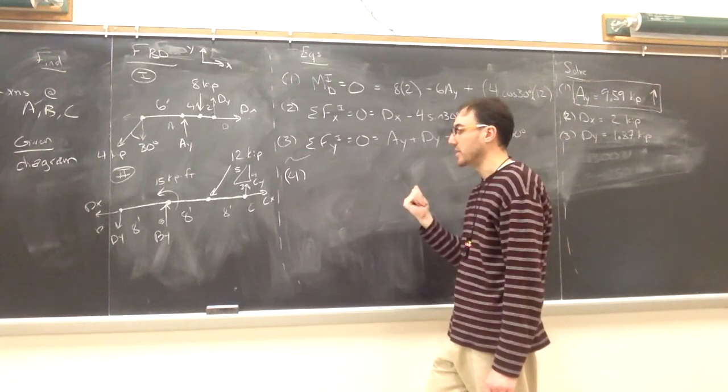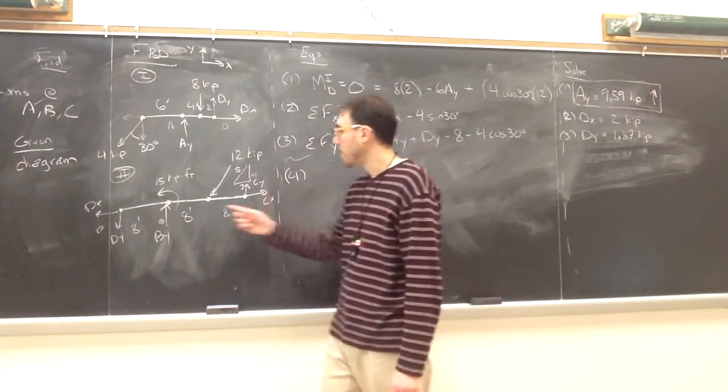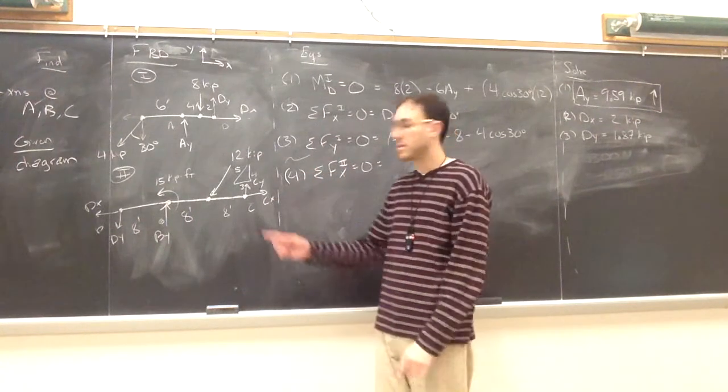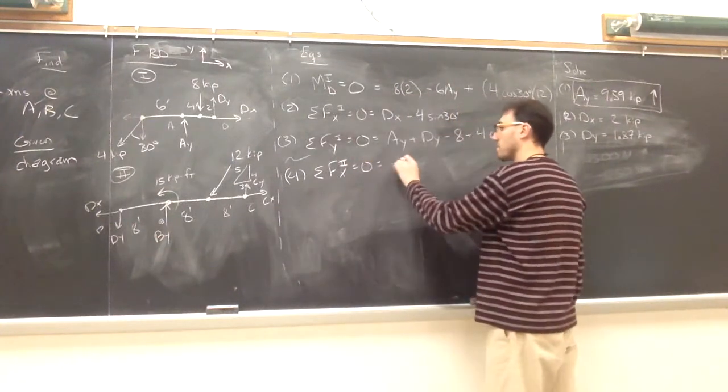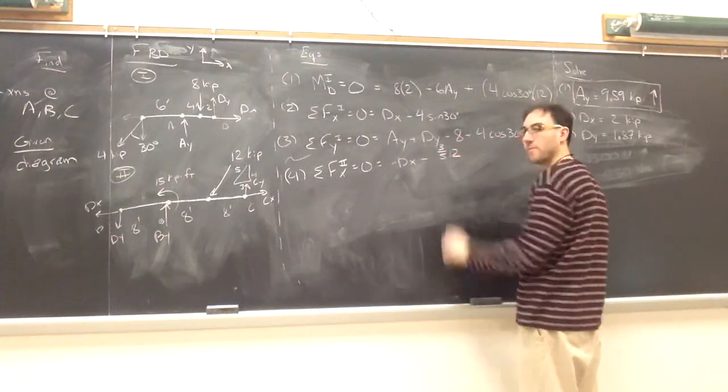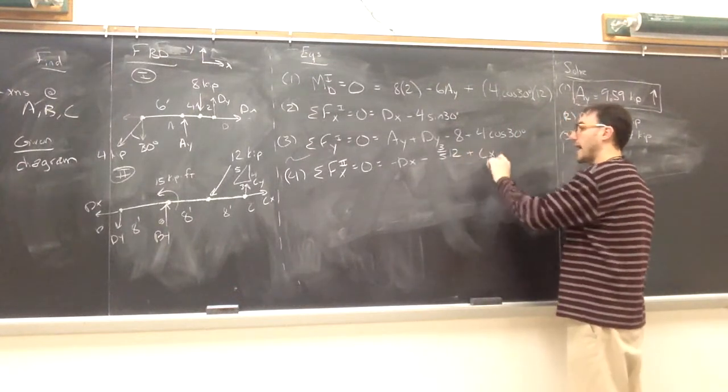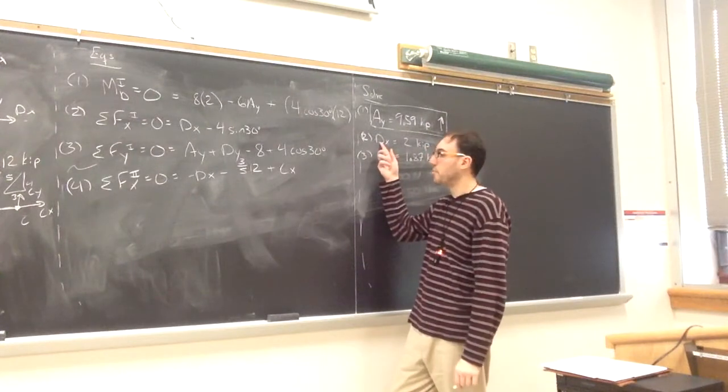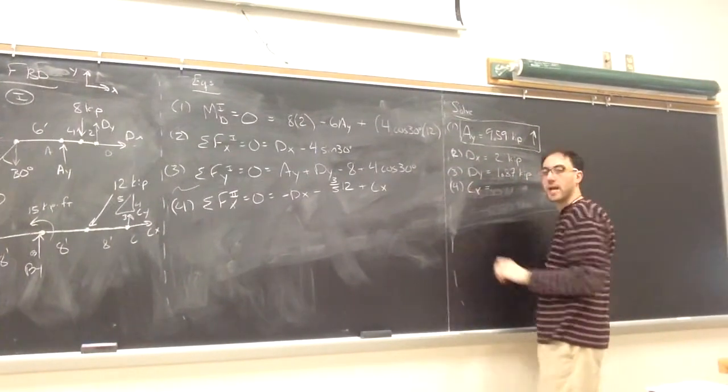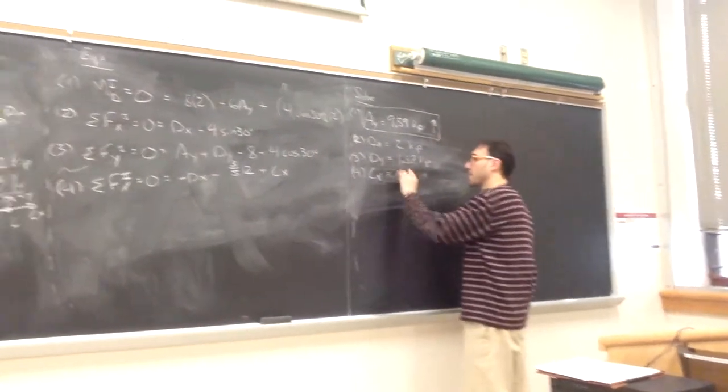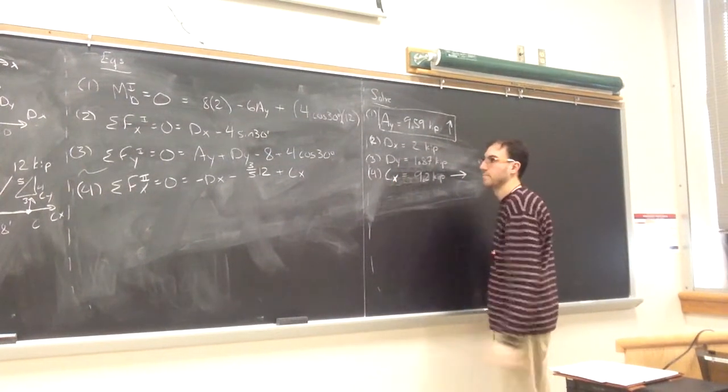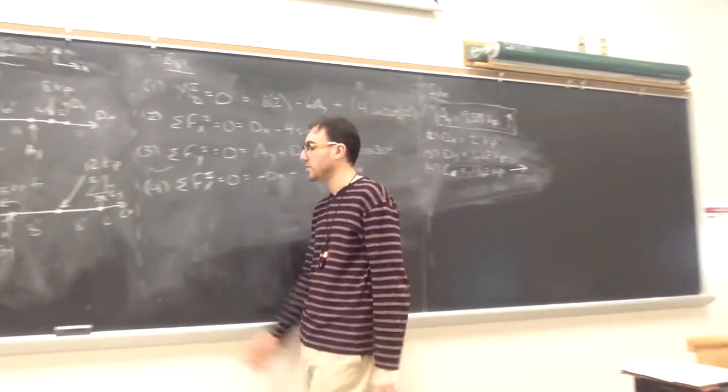I know what dx is. I know what dy is. So I could start either with summing forces in the x direction, which that's where I'll go first. Because the only thing I don't know at this point will be cx. I'll have a negative dx minus 3 fifths times 12 from that applied load, plus cx. From equation two, I know the numerical value for dx. So plugging it into my equation four, the only thing I don't know is cx. And cx will be 9.2 kip. And that will be to the right since I assumed it was right and it was positive.